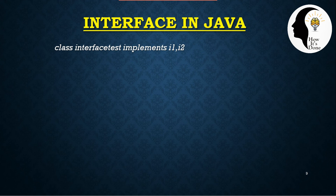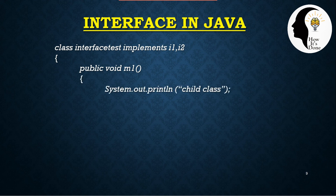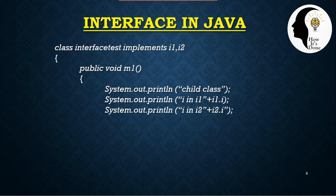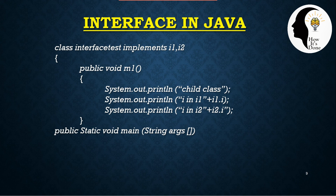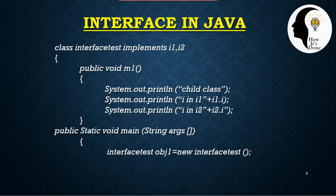We are going to implement the interfaces in a class. The child class implements both i1 and i2. The m1 method is defined once in the child class body. In the main function, an object obj1 is created, and obj1.m1 is called.